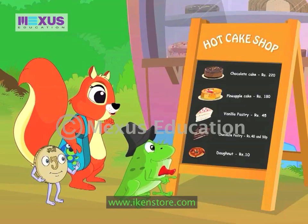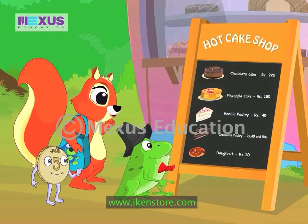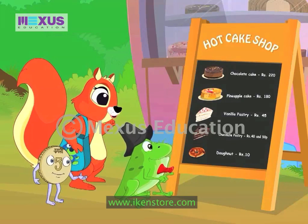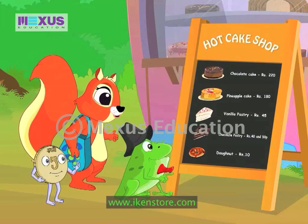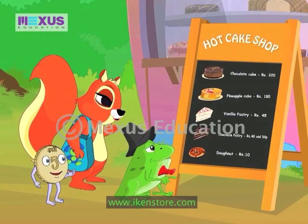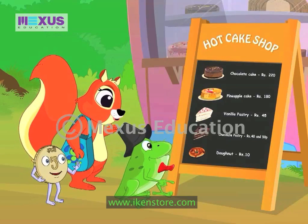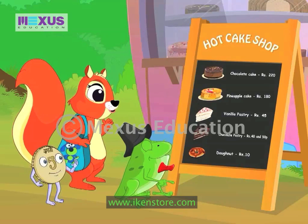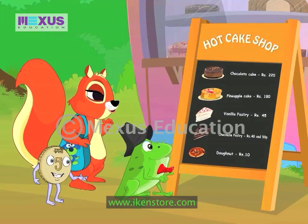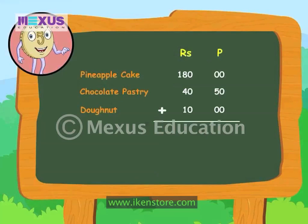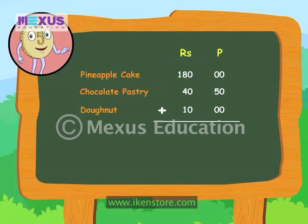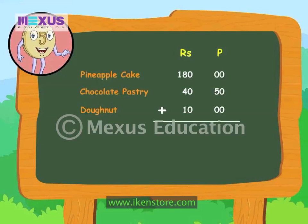When it is a bigger amount and you are unable to sum up, you should write the prices vertically and add to get the total amount. Come, I will show you. We write the value of rupees under rupees and that of paise under paise, and then add it using the normal addition method.